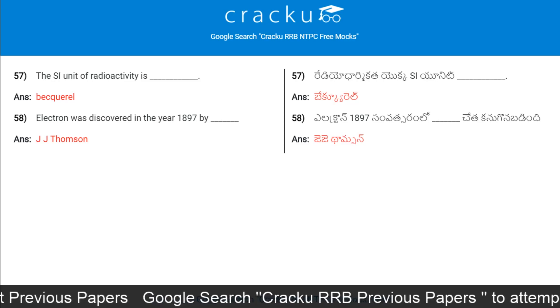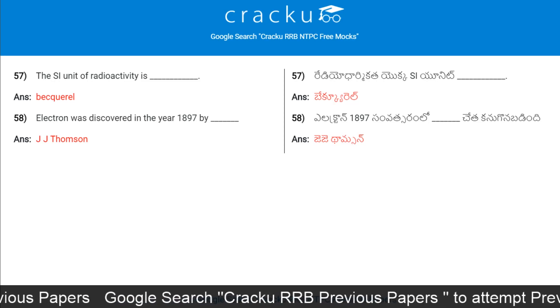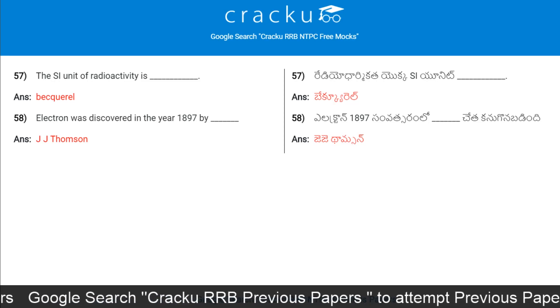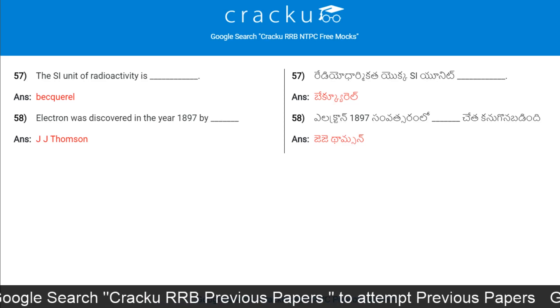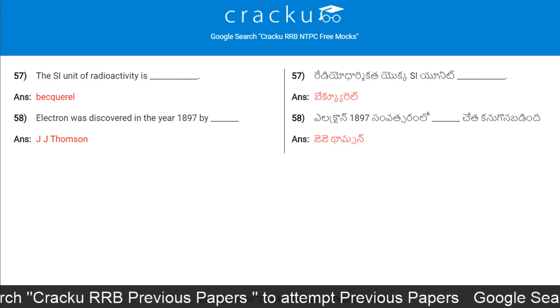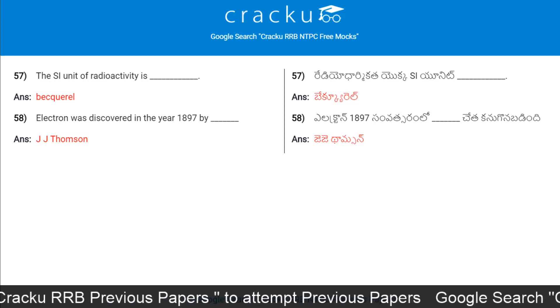The electron was discovered in the year 1897 by J.J. Thomson.